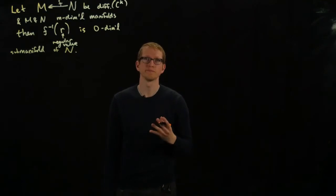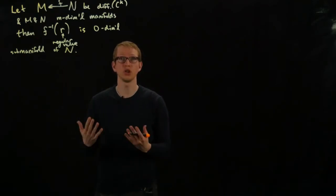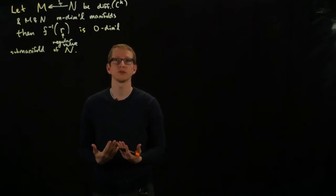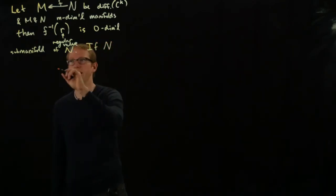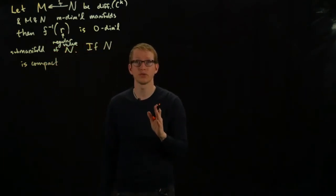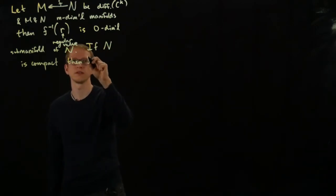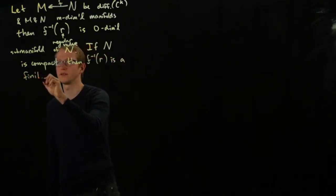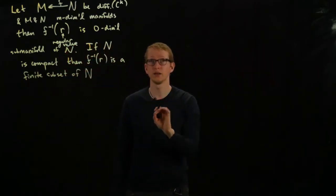Zero-dimensional manifolds are basically just unions of points. Because a single point is closed as a subset of the target space, then the inverse image, because F is continuous, is also going to be a closed subset of N. If N happens to be compact, then the inverse image of a regular value will always be a finite set, is a finite subset of N. So it's just a finite number of points in N.